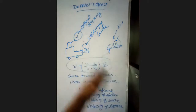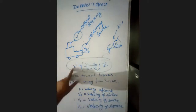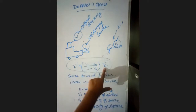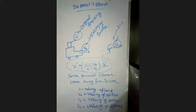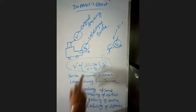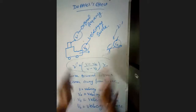We are using the Doppler effect formula. In this formula, ν' is the apparent frequency, ν is the real frequency, and V is the velocity of sound. This formula was derived through Doppler's effect.